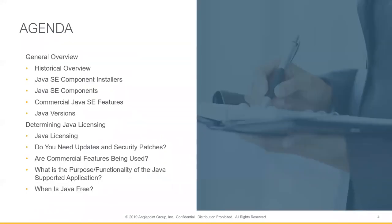Here's our agenda for today. We'll start with a brief overview of Java and discuss the various installers and components which make up Java SE and Java SE commercial programs. Next, we'll focus on determining Java licensing — a general overview of Java licensing.